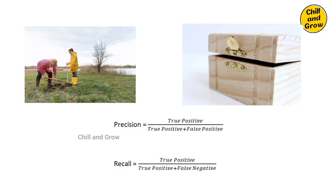Now, if you dig super carefully only where you are certain, you have high precision. But if you are very enthusiastic and dig everywhere to find any treasure, you will have high recall but very low precision — because you're digging many empty spots.